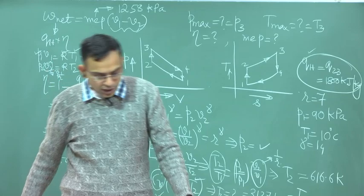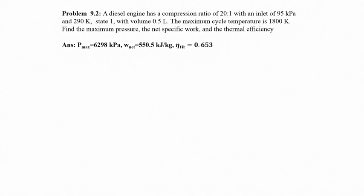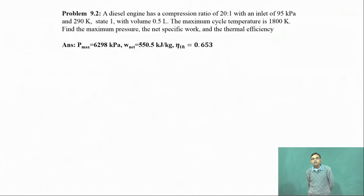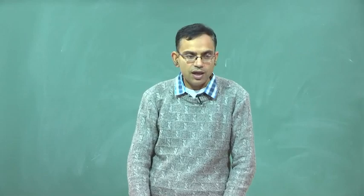We will now work out another problem for the Diesel cycle. A diesel engine has a compression ratio of 20:1, with inlet conditions of P₁ = 95 kPa, T₁ = 290 Kelvin at state 1, with a volume of 0.5 liters. The maximum cycle temperature is 1800 Kelvin. Find the maximum pressure, specific net work, and thermal efficiency.